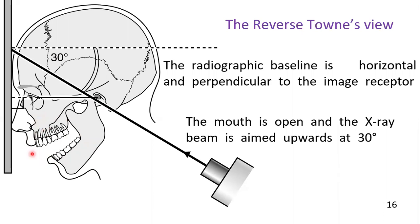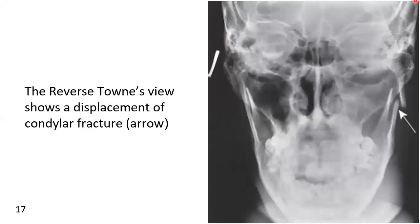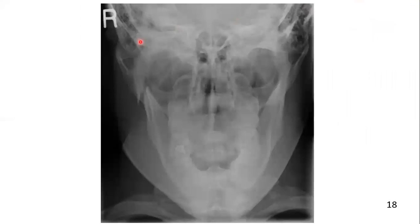In the PA jaw, the central ray was passing through the rami with mouth closed. In the reverse Towne view, the mouth is open and the central beam passes through the condylar areas, hitting the film at 30 degrees. The resultant image clearly shows the condylar area on both sides and you can easily appreciate the condylar fracture.